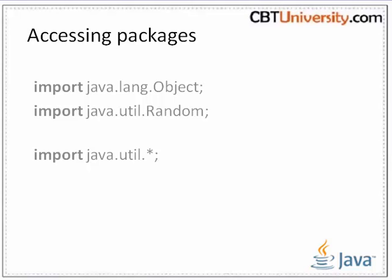Accessing packages is done by using the import keyword. For example, 'import java.lang.Object' imports the Object class from the lang package. 'import java.util.*' imports all of the classes from the util package. A type import declaration allows a named type to be referred to by a simple name rather than the full name that includes the package.